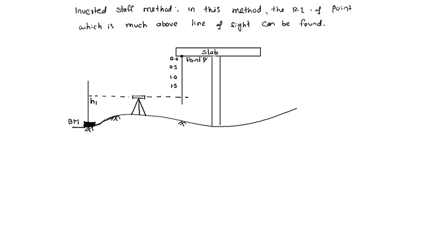The reading is h2. Now RL of point P equals RL of benchmark plus h1 plus h2. That is the RL of point P.